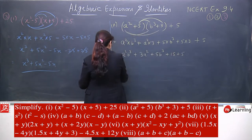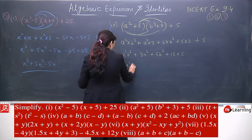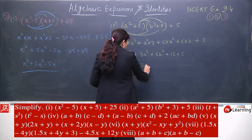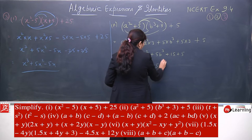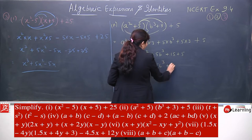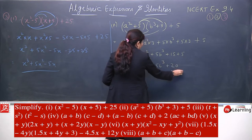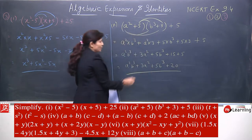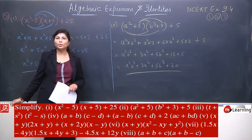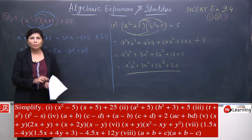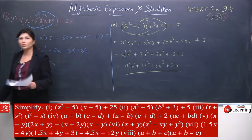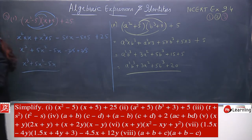Fine. Now simplifying: a square b cube, then 3a square plus 5b cube plus 15 plus 5. So finally it is a square b cube plus 3a square plus 5b cube plus 20. This is actually a very simple question. The plus 5 was given but it didn't have a huge effect on the question.